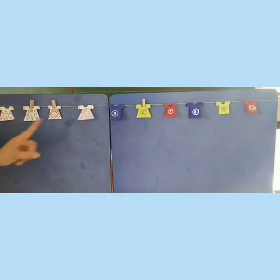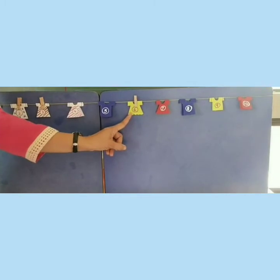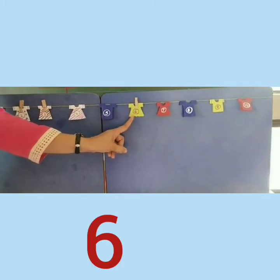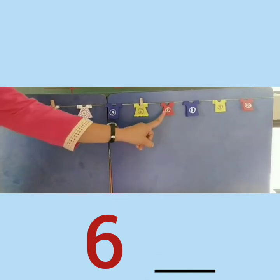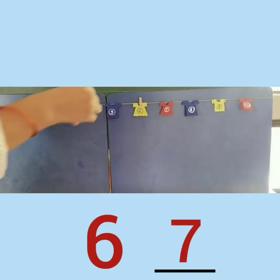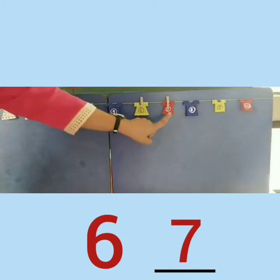Now, where is another bag? Can you see? Yes. Here it is. It is on the t-shirt where number 6 is written. Now, after 6, which number comes? Yes. Number 7. So we have to clip it here on number 7 t-shirt.